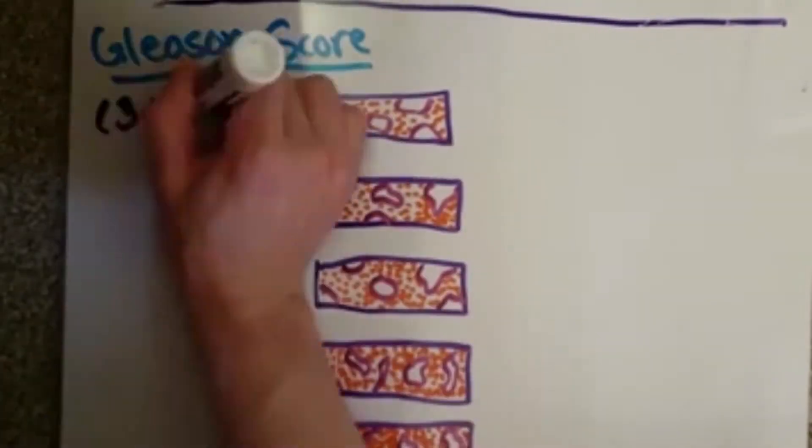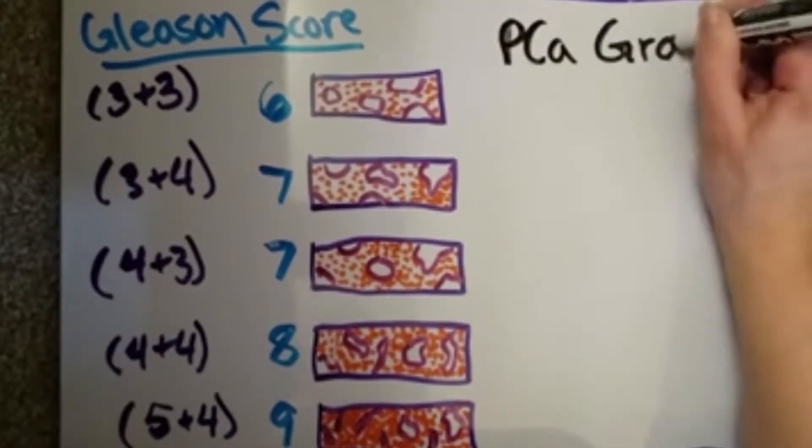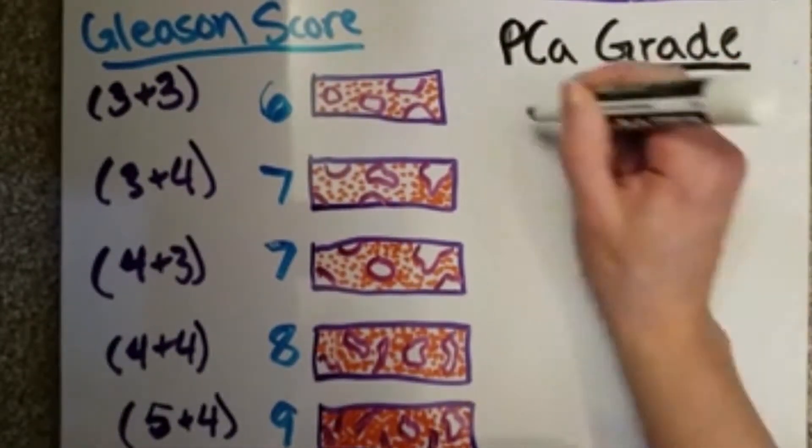The overall cancer grade is determined by the highest Gleason score, the highest, which would be made up of two GG's.